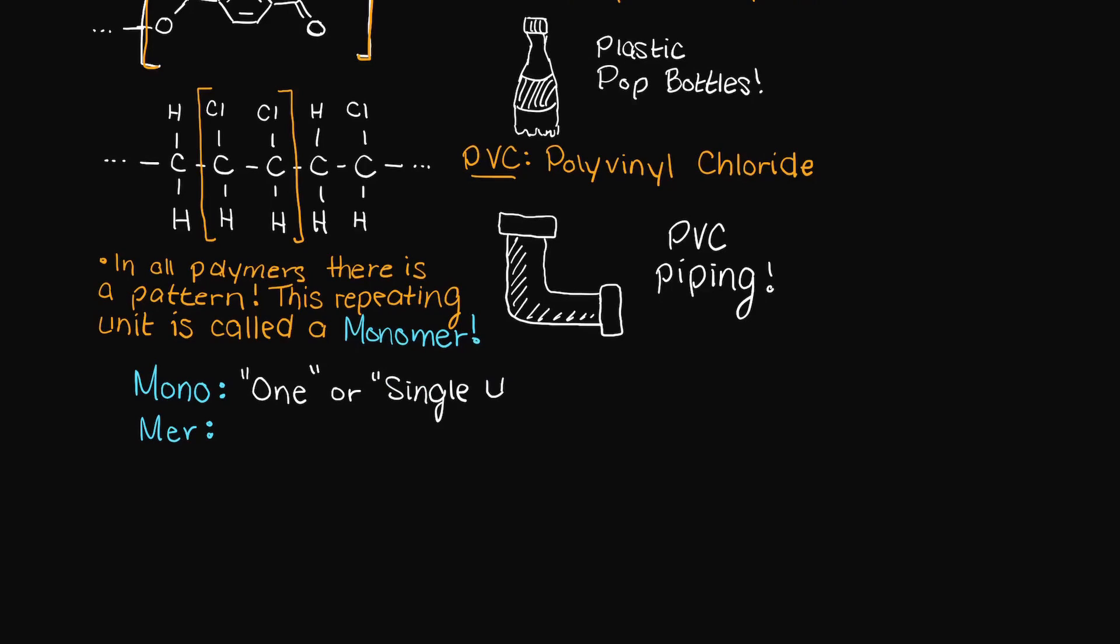Mono meaning one or a single unit, and mer which means repeating unit. So monomers are molecules that are structural units in polymers.